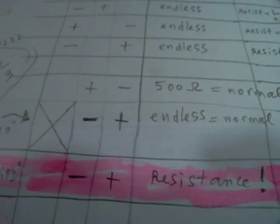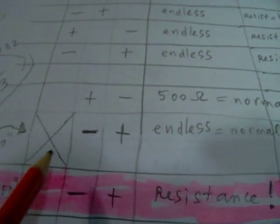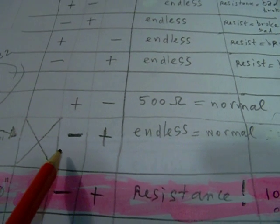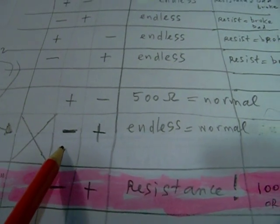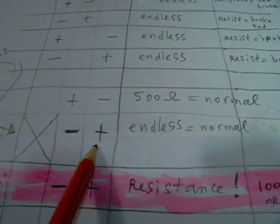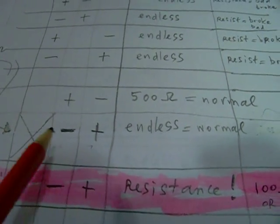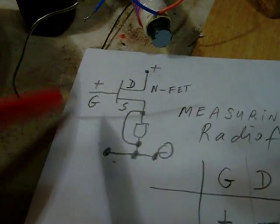And when you do the measurement again after you've done that, you will see that there is again an endless resistance between the drain and the source. So the charge has flowed away.